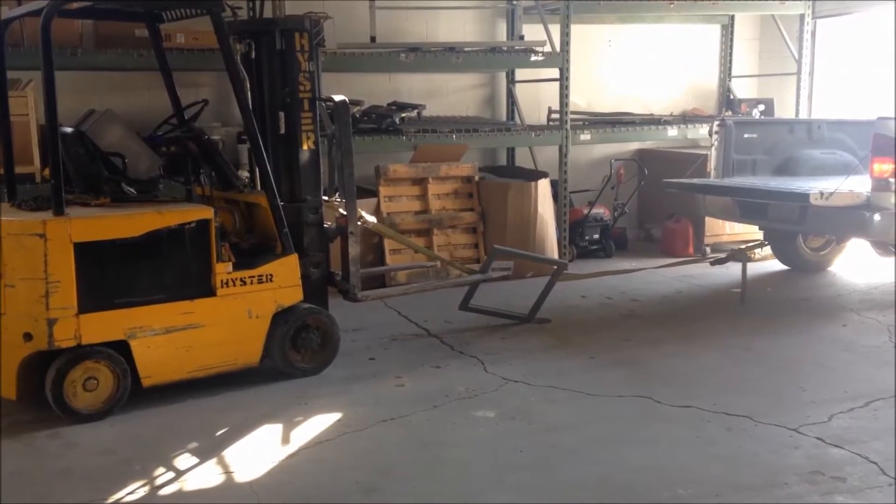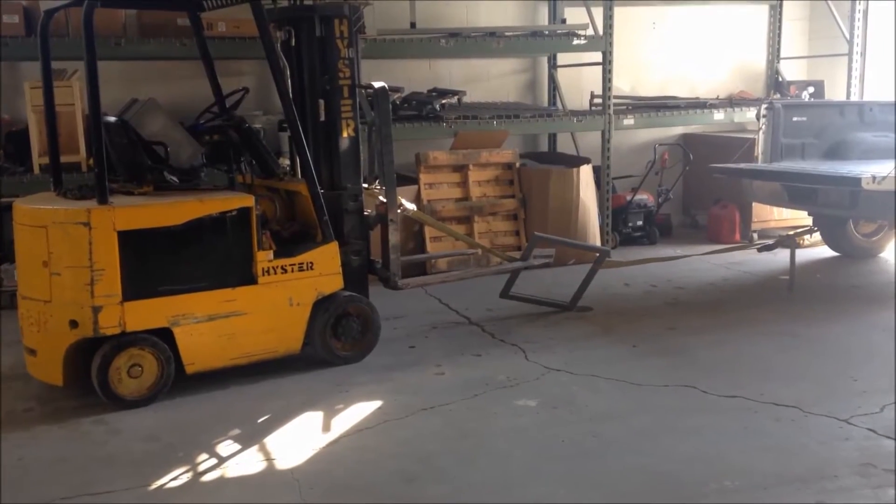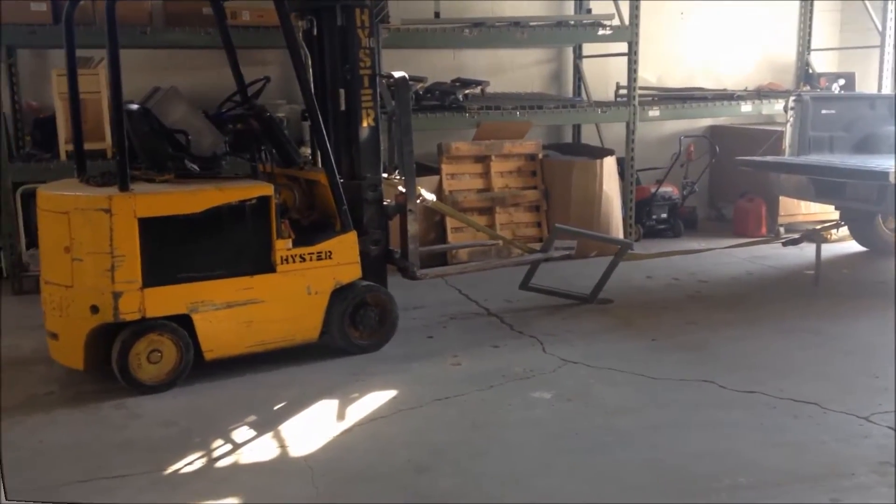So right there, we just pulled a 10,300 lb forklift with a little 24 inch by 24 inch casement sash.